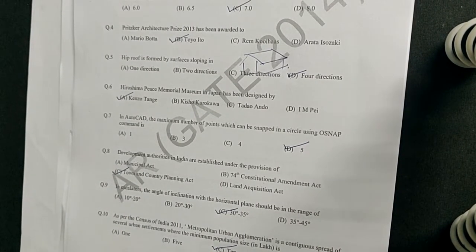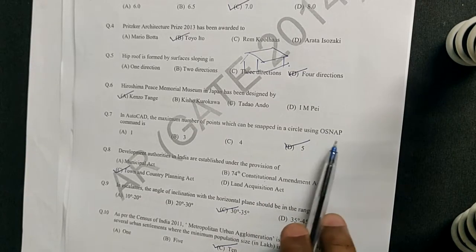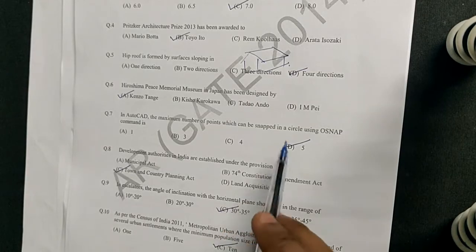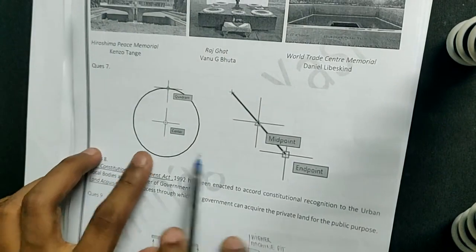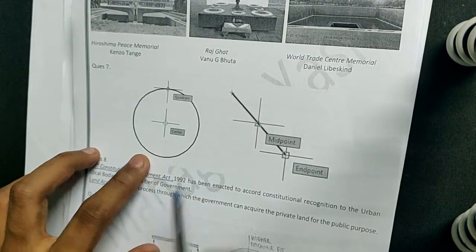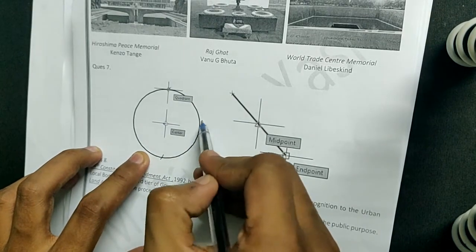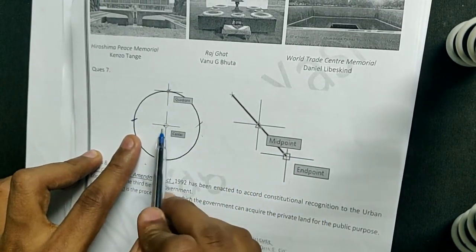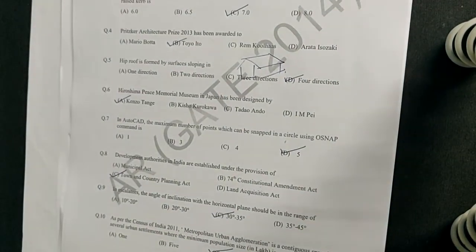The next question: in AutoCAD, what is the maximum number of points that can be snapped on a circle using Osnap? Osnap gives you points to pick up on an object. For a circle, the snap points would be the center plus four extreme coordinate points — one, two, three, four, five — so you will have five Osnap points.